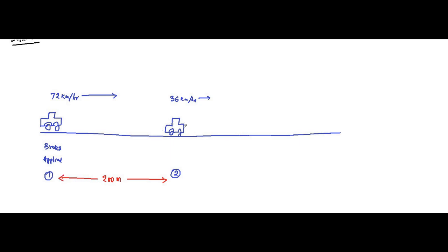From point 2, we need to find how much further the car will travel until it is brought to complete rest — that is, 0 meters per second — at point 3. The distance between points 2 and 3 is what we need to find; let's call it x.